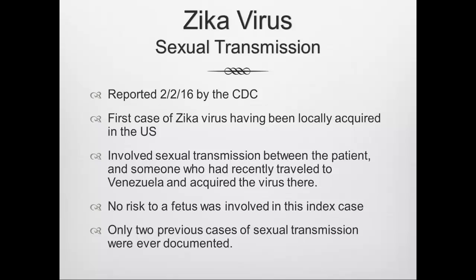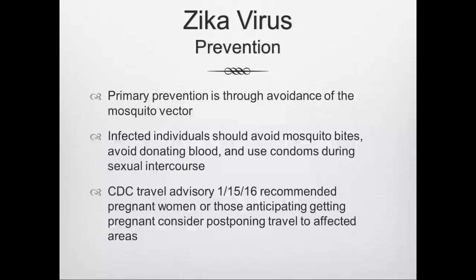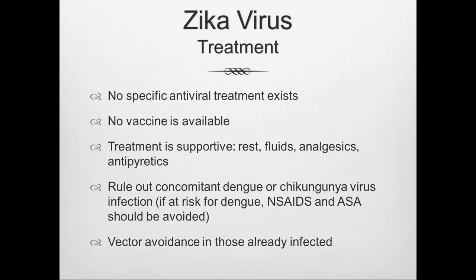Sexual transmission was first reported February 2nd — the first case of Zika locally acquired in the U.S. involved sexual transmission from a person who recently traveled to Venezuela. Only two previous cases of sexual transmission had been documented prior. Prevention is through avoidance of the mosquito vector. A CDC travel advisory from January 15th recommends pregnant women or those anticipating pregnancy consider postponing travel to affected areas. No specific antiviral treatment or vaccine is available; rule out concomitant dengue or chikungunya infection.